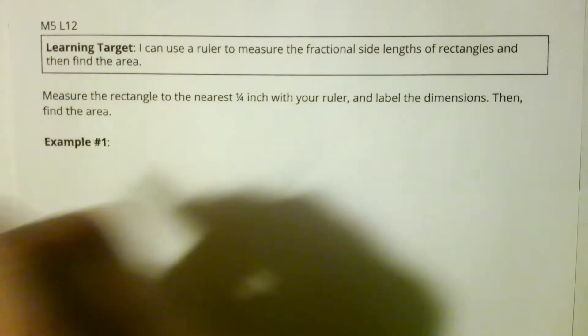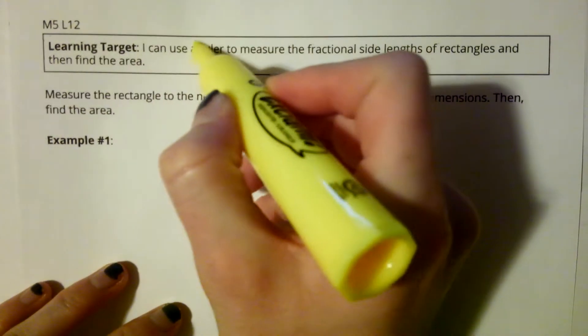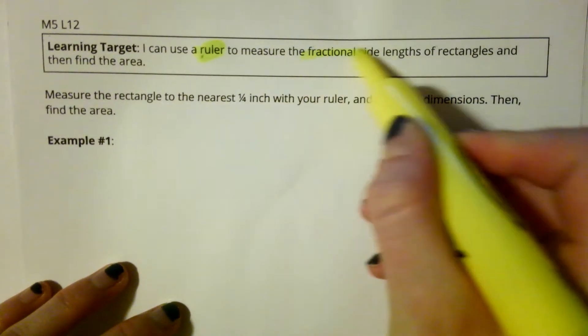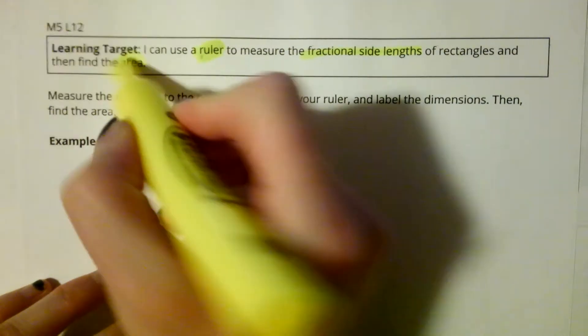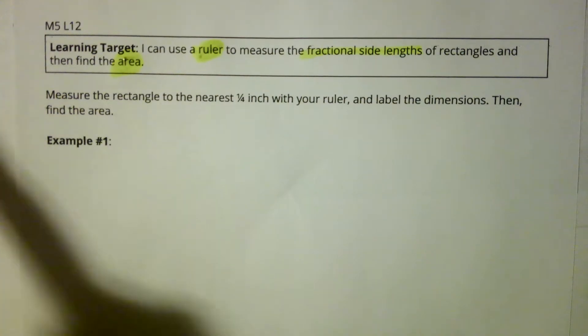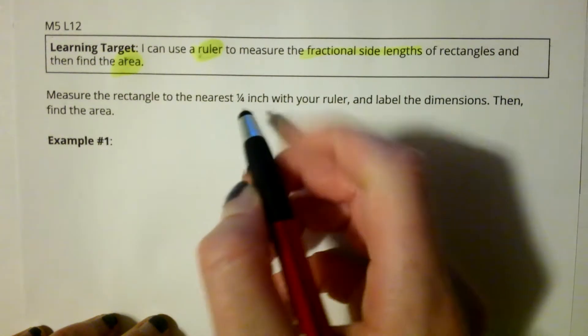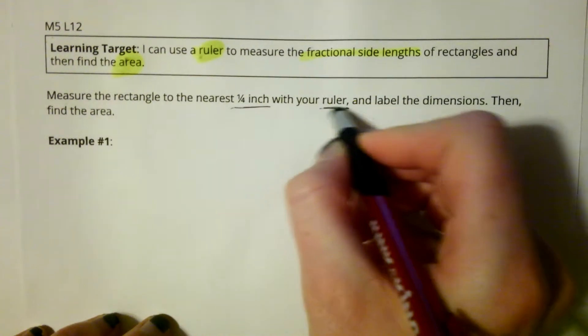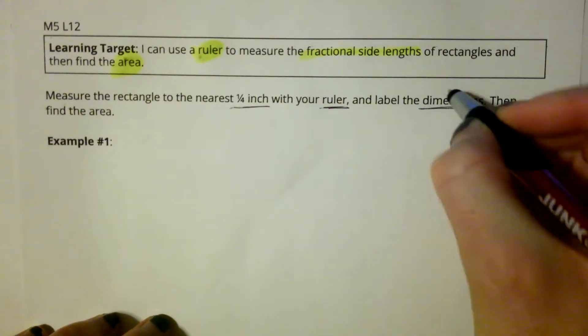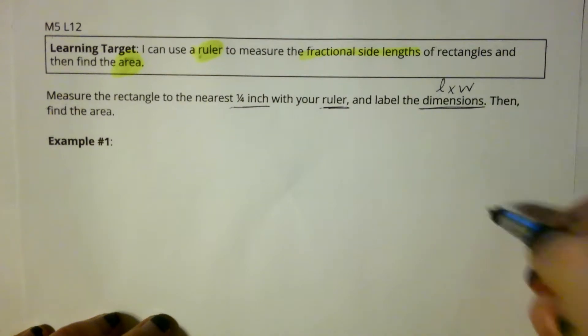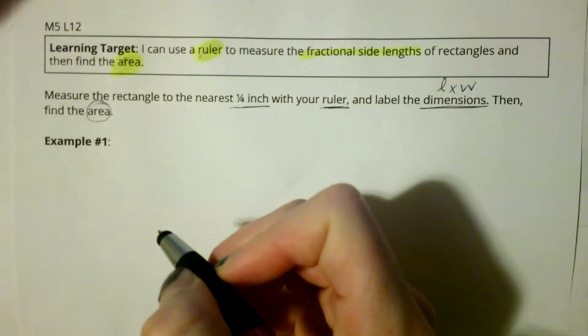Today we are going to work on Module 5, Lesson 12, and we're going to be using rulers to measure fractional side lengths of rectangles and then we're going to find the area. So the first set of directions says measure the rectangle to the nearest one-fourth inch with your ruler and label the dimensions. The dimensions will be the length and the width, then find the area.